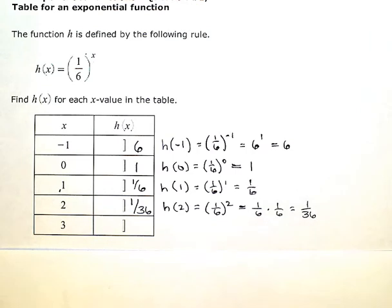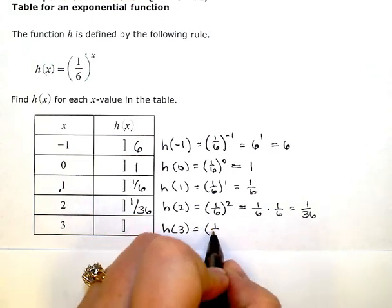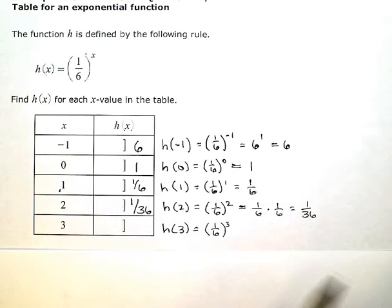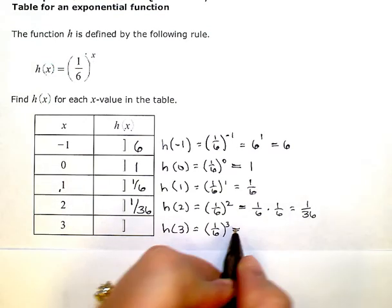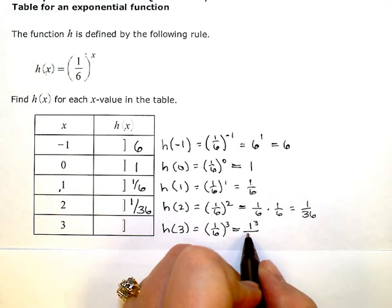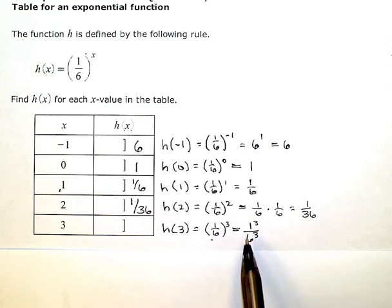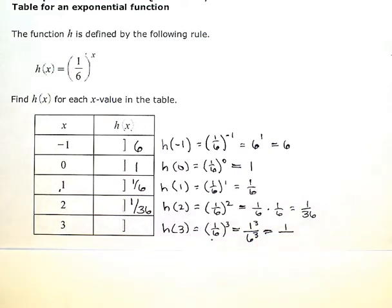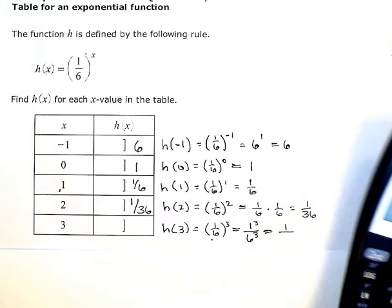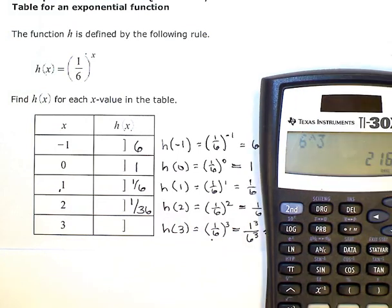And the last one: the function evaluated at 3, or h of 3, would be 1 sixth cubed. Following the same example, that's 1 sixth times 1 sixth times 1 sixth. Using the power rule, I apply the exponent to numerator and denominator: 1 over 6 times 6 times 6, and 6 to the 3rd gives us 216. So h of 3 equals 1 over 216.